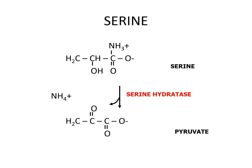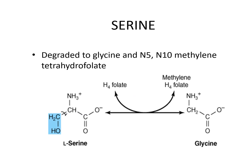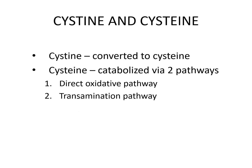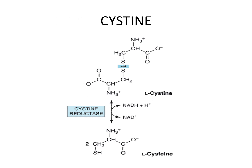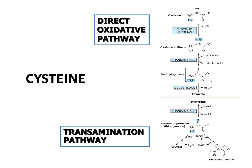Serine can also be metabolized to pyruvate or degraded to glycine and N5,N10-methylene tetrahydrofolate. Cystine is converted to cysteine by cysteine reductase. Cysteine is then catabolized by two pathways: either the direct oxidative pathway or the transamination pathway.